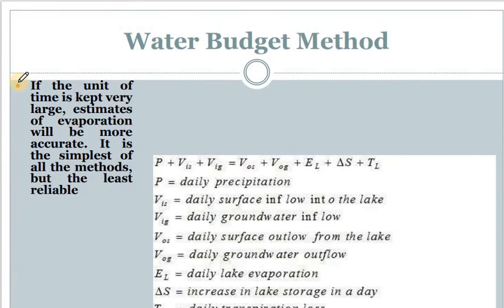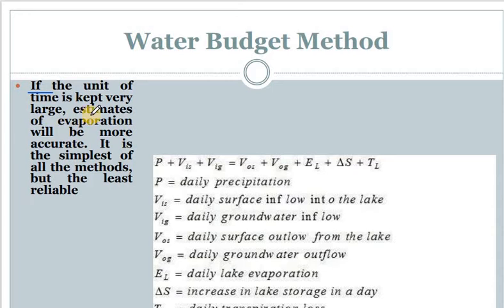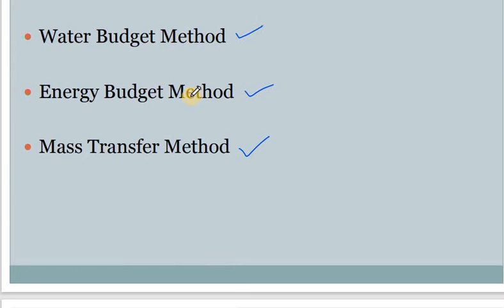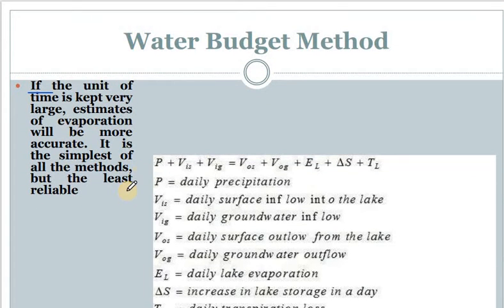Starting with the water budget method: if the unit of time is kept very large, we get a better and more accurate result. Estimation of evaporation will be more accurate when the unit time is kept very large. It is the simplest of all the methods but the least reliable — meaning it is not that accurate. The duration is generally kept in weeks or sometimes taken in months.